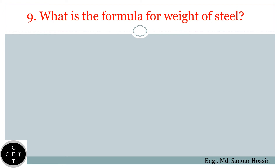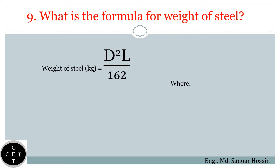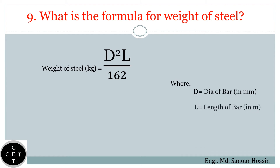Question number nine: What is the formula for weight of steel? Weight of steel equals D squared times L divided by 162, where D equals diameter of bar in millimeters and L equals length of bar in meters.